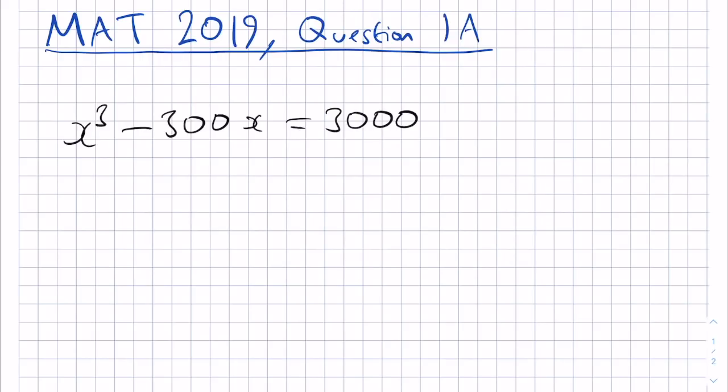then we notice that we have a cubic equation. If we rearrange and get the constant on the left-hand side, we would have x³ - 300x - 3000 = 0. We could write this cubic polynomial as f(x). So we're looking for the roots of f(x).